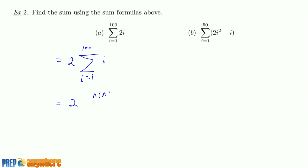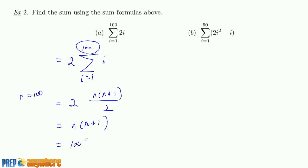The formula for this is n(n+1)/2, which simplifies to n(n+1), where n is 100. So it's 100 times 101, which gives you 101 with two zeros.